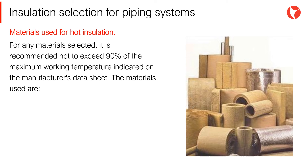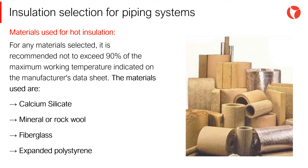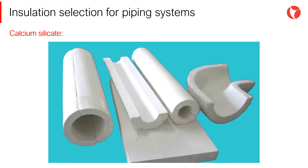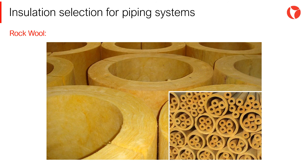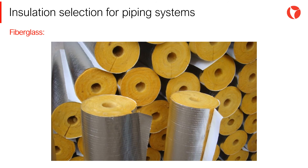Most materials used are calcium silicate, mineral or rock wool, fiberglass, and expanded polystyrene. One of the most widely used ways to insulate pipes are preformed cylindrical sections, which facilitates installation considerably. On the screen we see an example of calcium silicate as an insulating material, an example of rock wool — perhaps the most used insulating material for all piping systems in industrial plants — and an example of preformed sections of fiberglass.